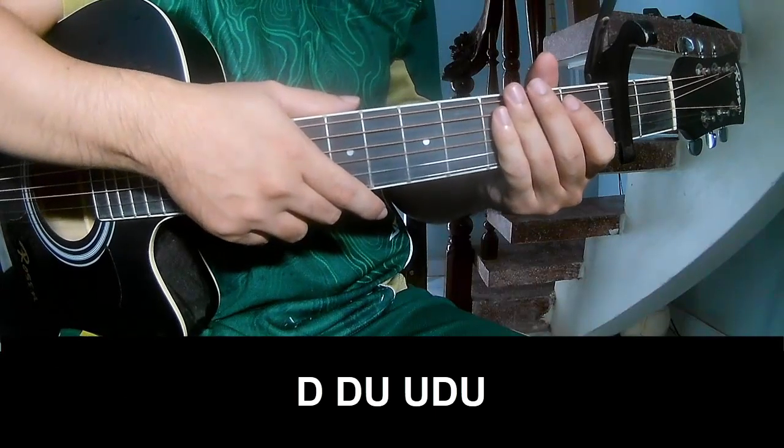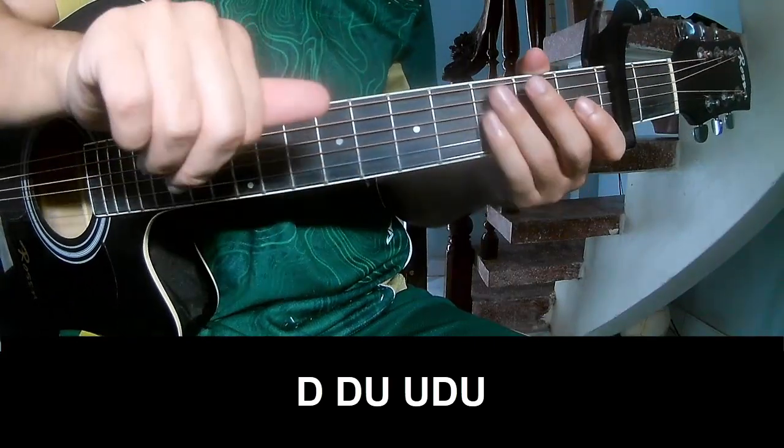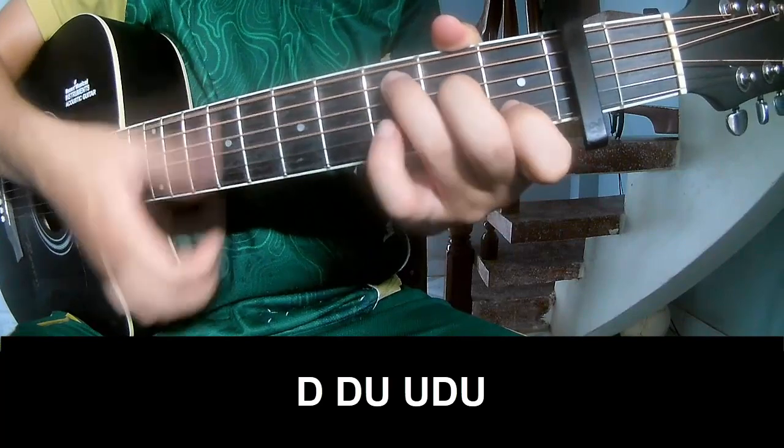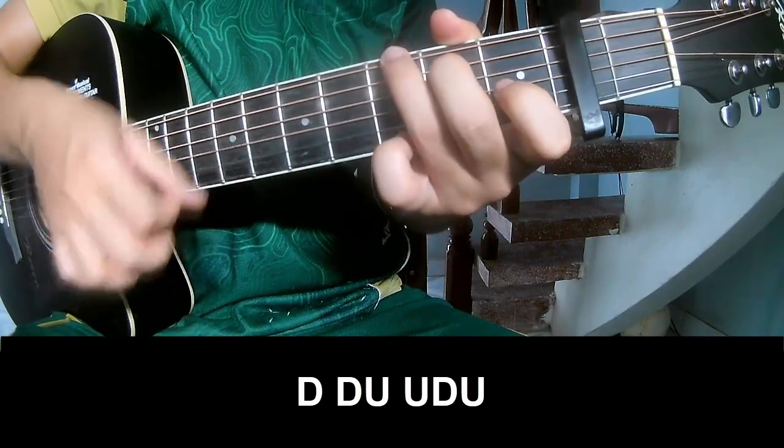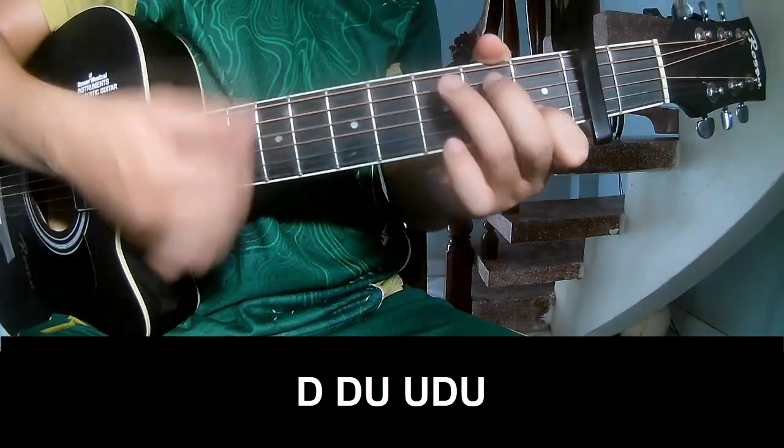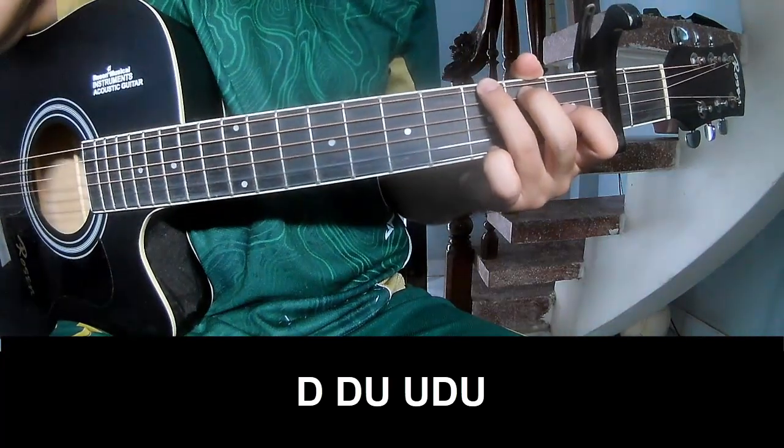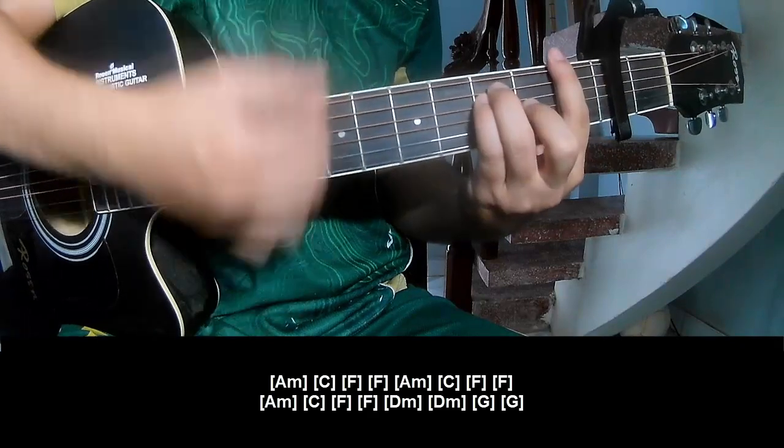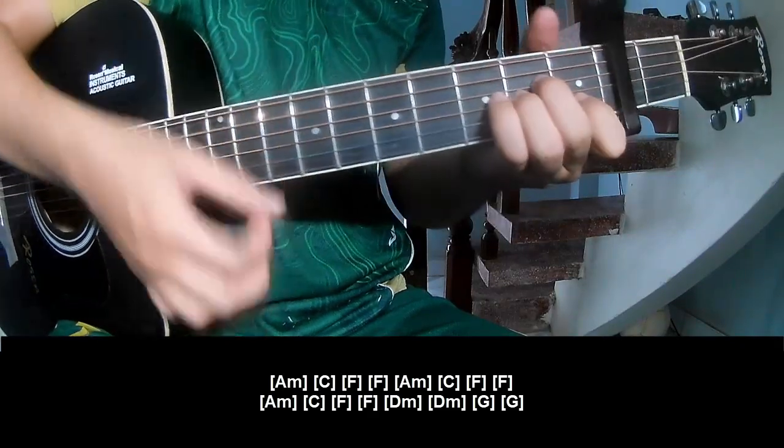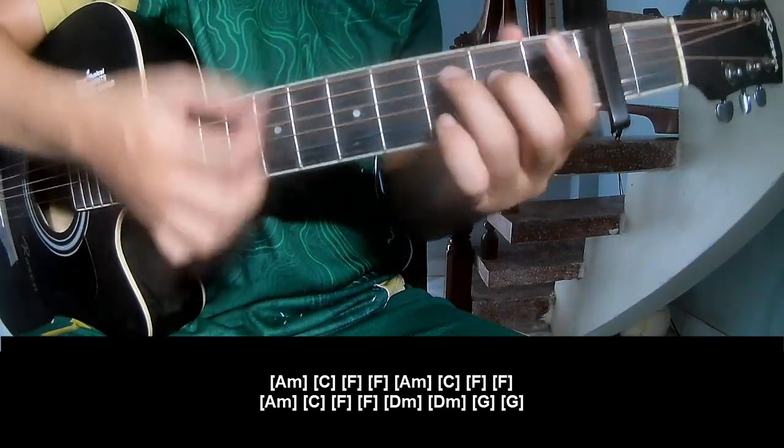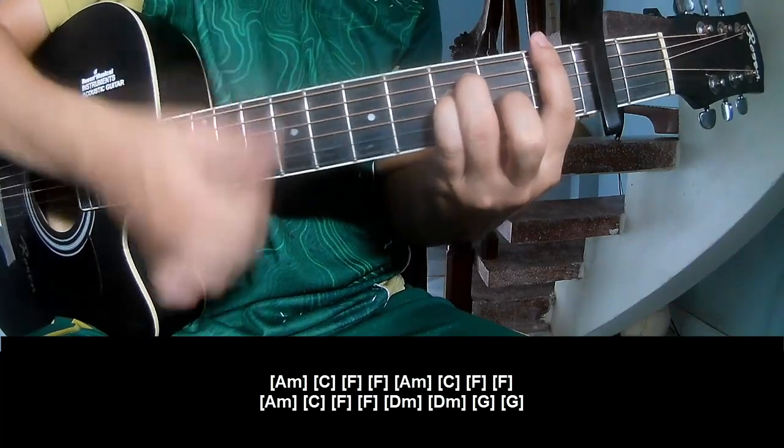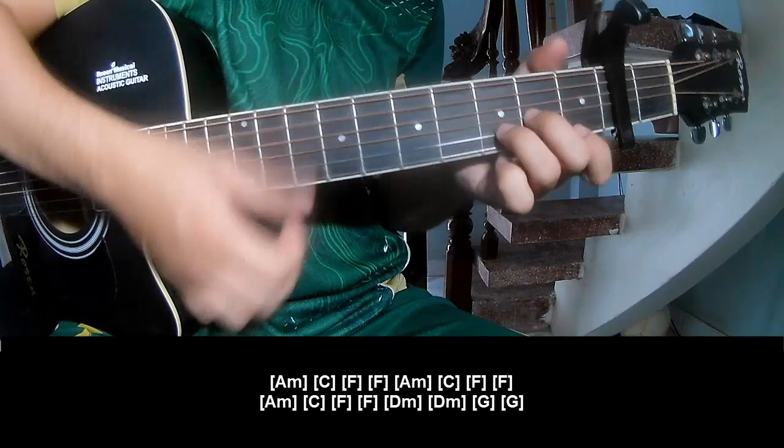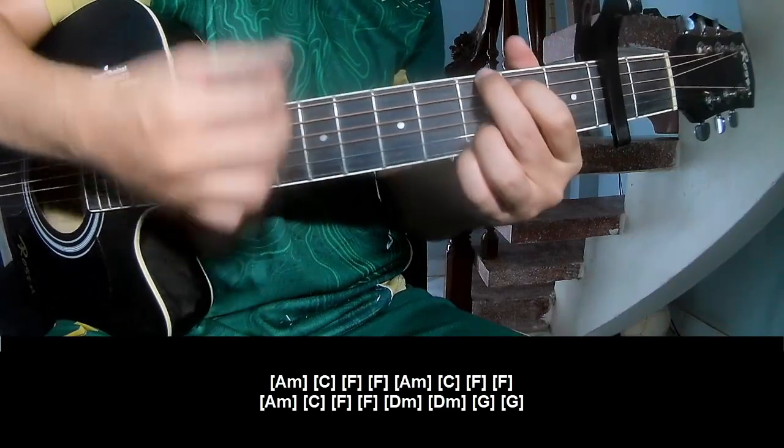The verse, bridge, and outro should play down down up up down down down down up up down down up down down up down down. As we play along: Am, C, F, F, Am, C, F, F, Am, C, F, F, Dm, Dm, G, G.